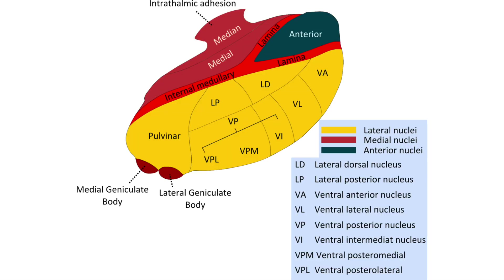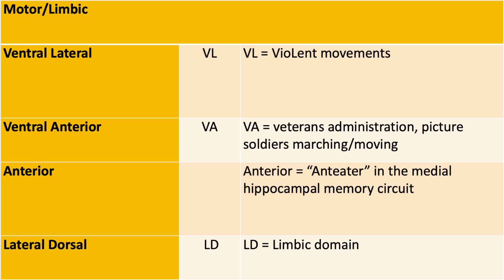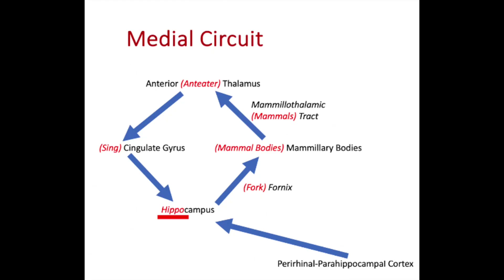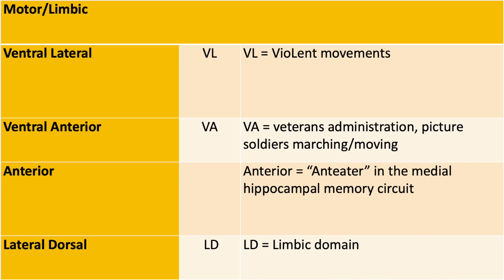Now look at this picture and find the anterior and the lateral dorsal — also called the dorsolateral nucleus. These both have limbic functions. The anterior thalamus is the anteater in my hippo story that helps remember the medial hippocampal circuit. The story goes: a hippopotamus travels along a pathway until he gets to the anteater — the anterior thalamus — then sings a song to the other hippos. The lateral dorsal or dorsolateral nucleus is closely related and works with the anterior thalamus, so remember those two together. LD stands for limbic domain.